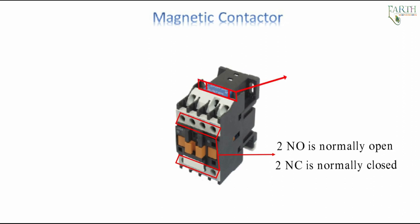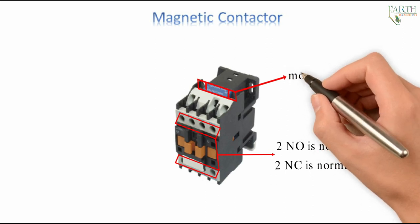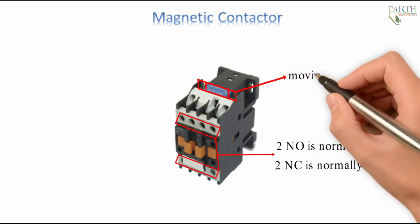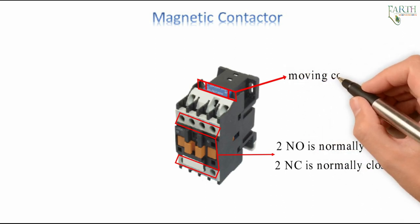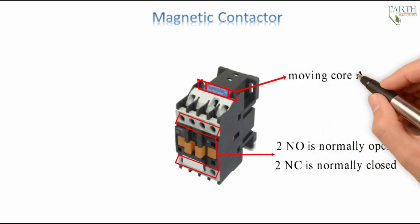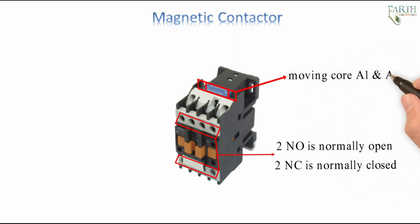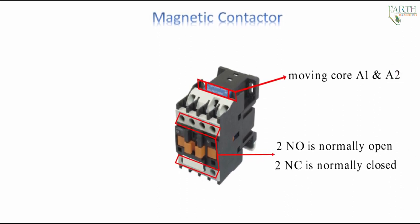In a contactor, a magnetic field is produced which attracts the moving core of the contactor — terminals A1 and A2. Rated coil voltage: 220-230V / 220-240V. Frequency: 50/60 Hz.